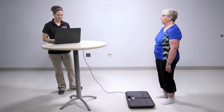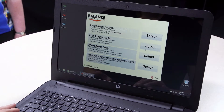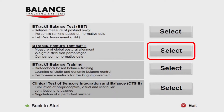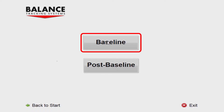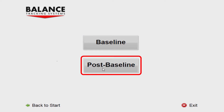From the Protocol Selection screen, press the Select button next to the Btracks Pasteur Test. On the following screen, you are given two options. If this is the first test you are conducting on an individual, select Baseline Test to establish a reference value for all future testing. If this is a follow-up test to be compared to baseline results, press Post Baseline.